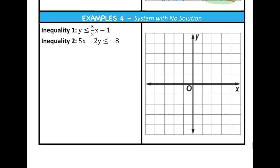Example four shows what it looks like when a system of inequalities has no solution. The first inequality is already in slope-intercept form: the y-intercept is −1 and the slope is 5/2, meaning I rise 5 units and move right 2 units. Before drawing the line — think about it: what type of line do you use for less than or equal to? It's a solid line, and since it is less than, I shade below the line.